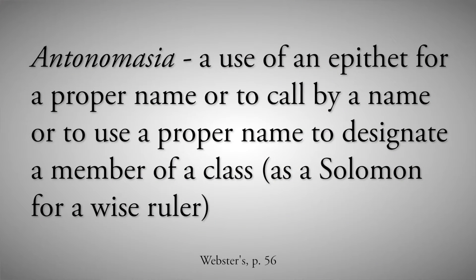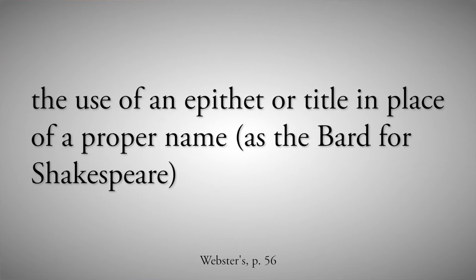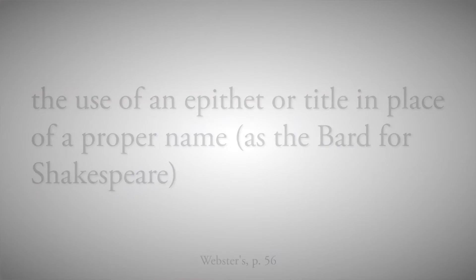Antonomasia is a figure of speech — the use of an epithet for a proper name, or to use a proper name to designate a member of a class, as in calling someone a Solomon when you mean they're a wise ruler. Or the use of an epithet or title in place of a proper name, as in calling Shakespeare 'the Bard.' So antonomasia is essentially a name change, and there are some in the Bible we have to pay specific attention to when we substitute one name for another.